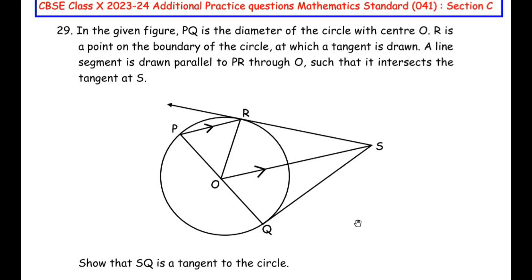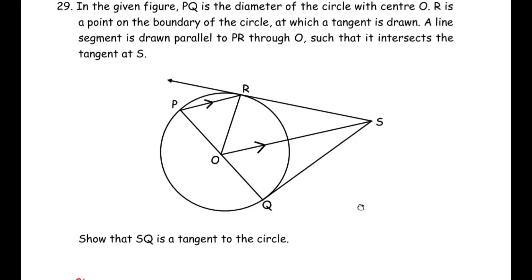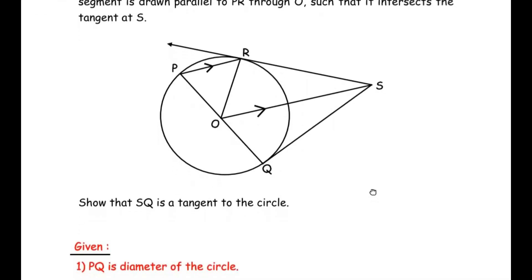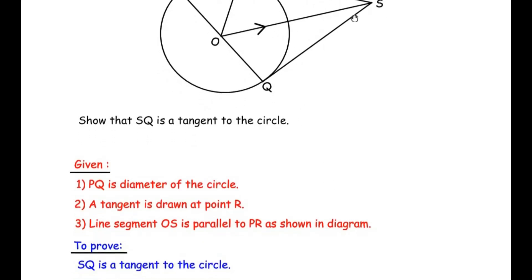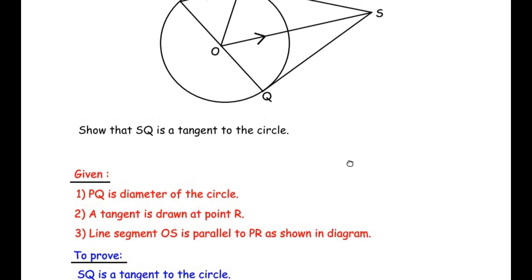Let us understand the question and write down the given points. The given information is: PQ is a diameter of the circle, a tangent is drawn at point R, and line segment OS is parallel to PR — you can see the arrows indicating that PR is parallel to OS. We have to prove that SQ is a tangent to the circle.